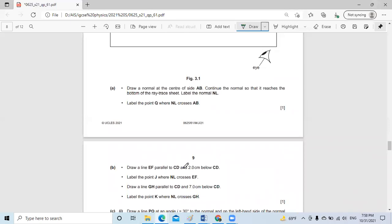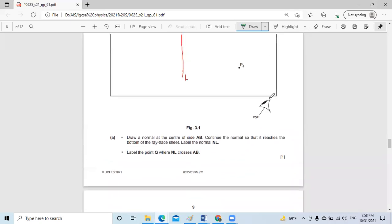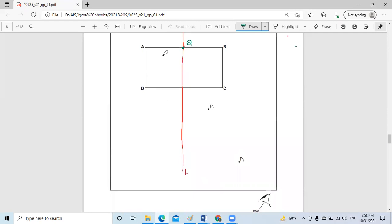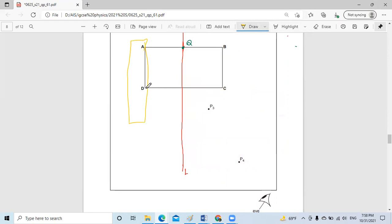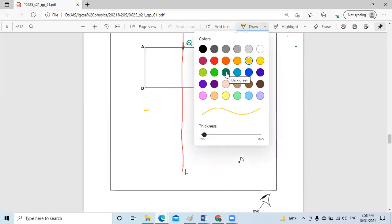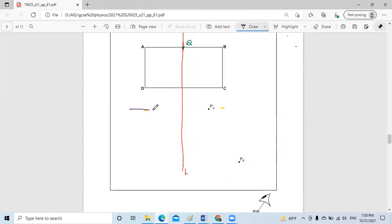Then draw the line EF parallel to CD, two centimeters below CD. Now we will bring our ruler and put it here. We measure two centimeters below, and the same thing here, measure two centimeters below. We will mark the points on both sides so we can draw a line which is parallel to CD and two centimeters below. It will be something like this.